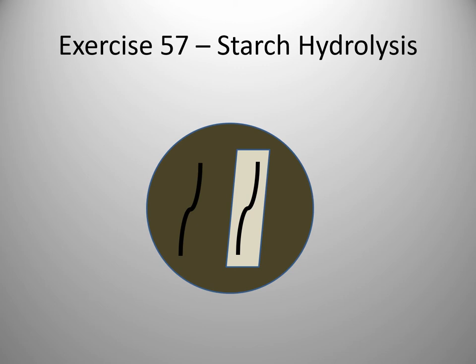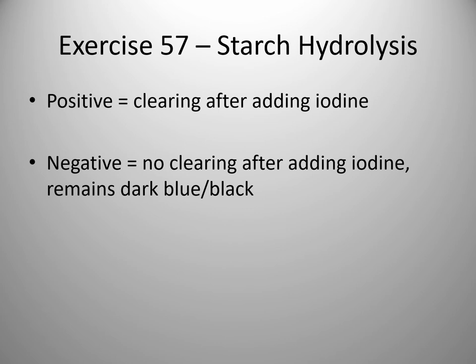When iodine mixes with starch, it will turn a very dark brown, almost black color. If you flood the plate with iodine, as you can see in this picture, where there is no clearing — that dark color around the streak — that indicates there is still starch present. That would be a negative for starch hydrolysis; it wasn't able to break it down. When you have clearing, such as that lighter color rectangle around the streak, that means the starch around where you streaked the bacterium is gone. The bacteria was able to break down and utilize the starch, so it would be considered positive for starch degradation or starch hydrolysis. Positive would be clearing after adding the iodine. Negative — there would be no clearing; the whole plate would remain a very dark black, almost dark blue color.